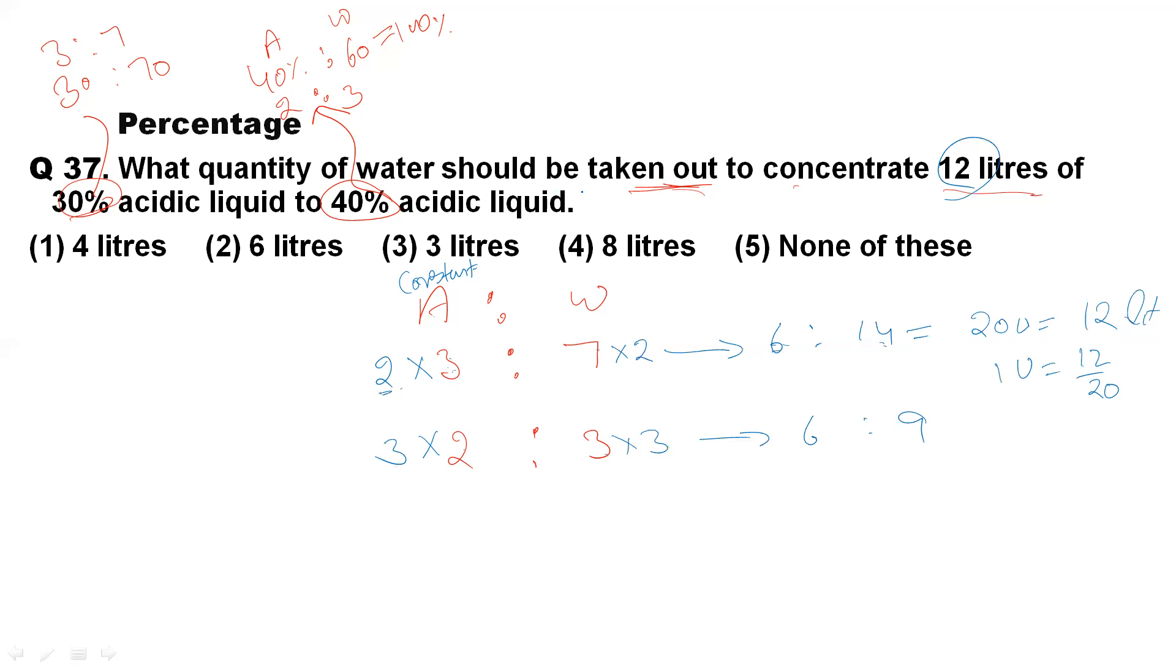Now after that, they are asking how much water is taken out. If you see in the first, there is water—this is acid, this is water. Water is 14 units, and after that it will become 9. That means we have taken 5 units of water from that, or you can say this is 5 units.